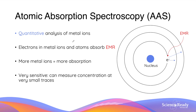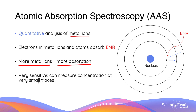Atomic Absorption Spectroscopy is a quantitative technique that analyzes the concentration of metal ions in a sample by the use of spectroscopy. Electrons in metal ions and atoms can absorb EMR to transition to a higher energy orbit, as shown in the diagram here. AAS relies on the fact that the quantity of metal ions determines the amount of energy absorbed — the more metal ions there are, the greater the absorption. AAS is a very sensitive technique, able to detect and measure the presence of metal species even when they are in small traces.